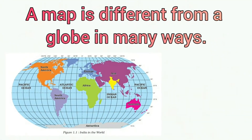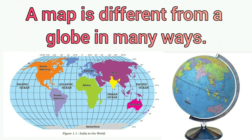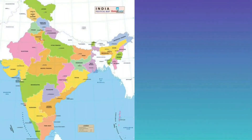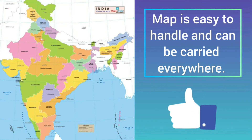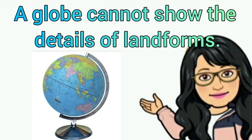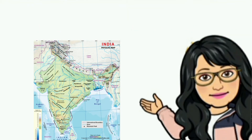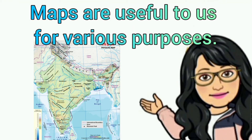A map is different from a globe in many ways. First, a globe is bulky and cannot be carried easily, whereas a map is easy to handle and can be carried everywhere. The second difference is that a globe cannot show the details of landforms or the location of small towns and villages, whereas a map gives us detailed information about a place. So maps are useful to us for various purposes.